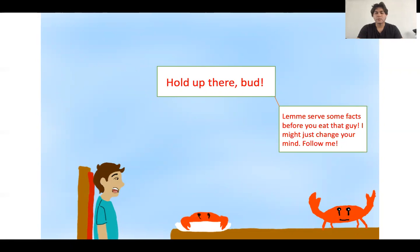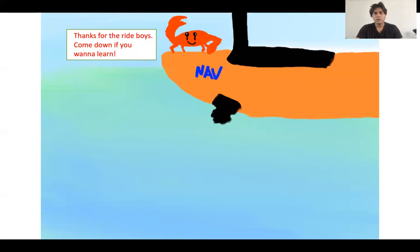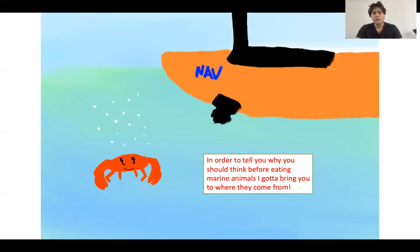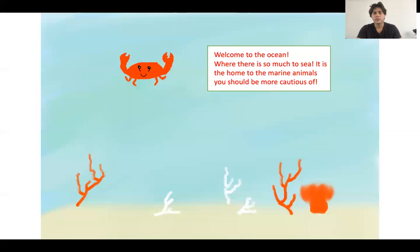This crab's name is Eugene. The next page, we see him hitching a ride to the ocean on a little boat. Thanks for a ride, boys. Come down if you want to learn. And then he will jump into the water, because in order to tell you why you should think before eating marine animals, I got to bring you to where they come from first. Welcome to the ocean where there is much to see. It is the home to the marine animals you should be more cautious of.